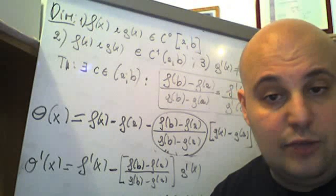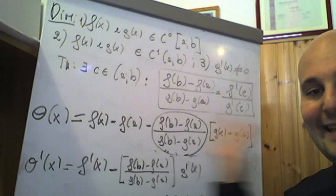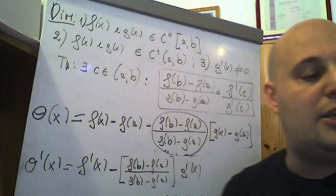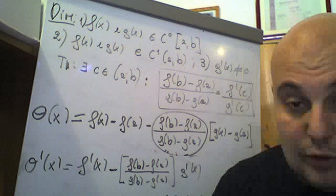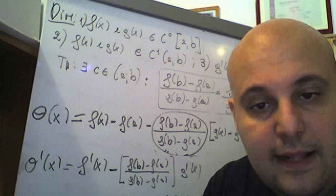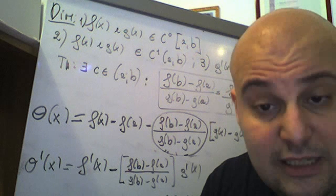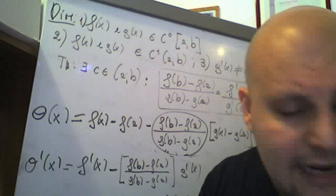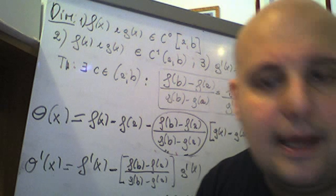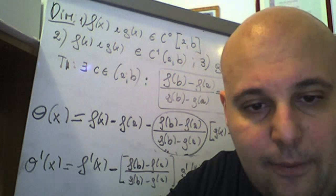Abbiamo dunque dimostrato la tesi del teorema di Cauchy, servendoci del teorema di Rolle applicato alla funzione ausiliaria θ(x). Nel prossimo video andremo a vedere l'ultimo dei tre teoremi della triade del calcolo differenziale, che è il teorema di Lagrange. Esamineremo le conseguenze del teorema di Lagrange e poi andremo a vedere i teoremi di De L'Hôpital. Ciao a tutti e alla prossima!